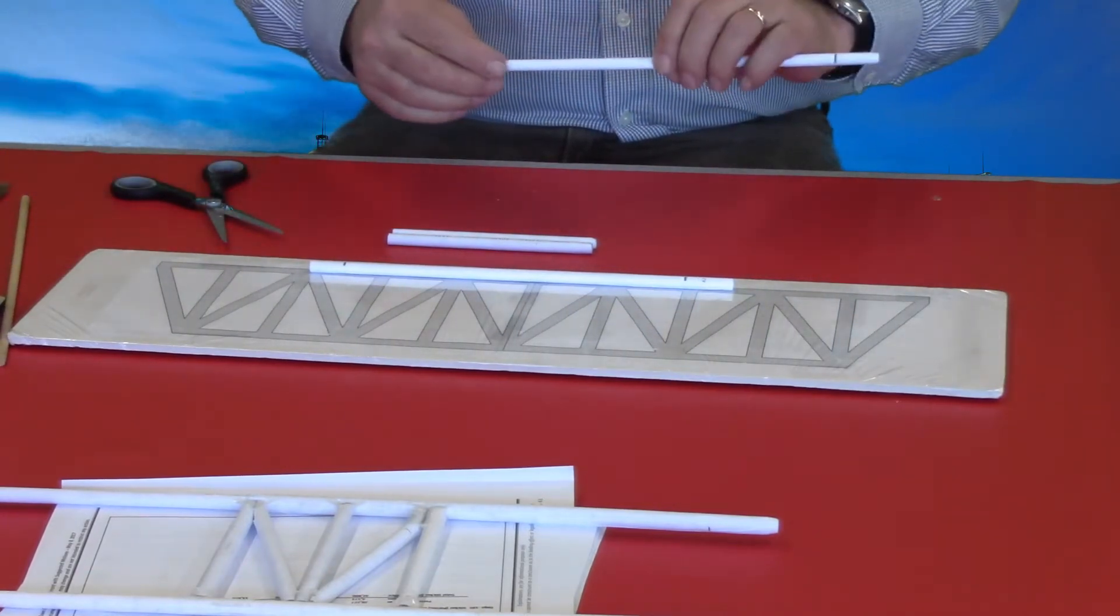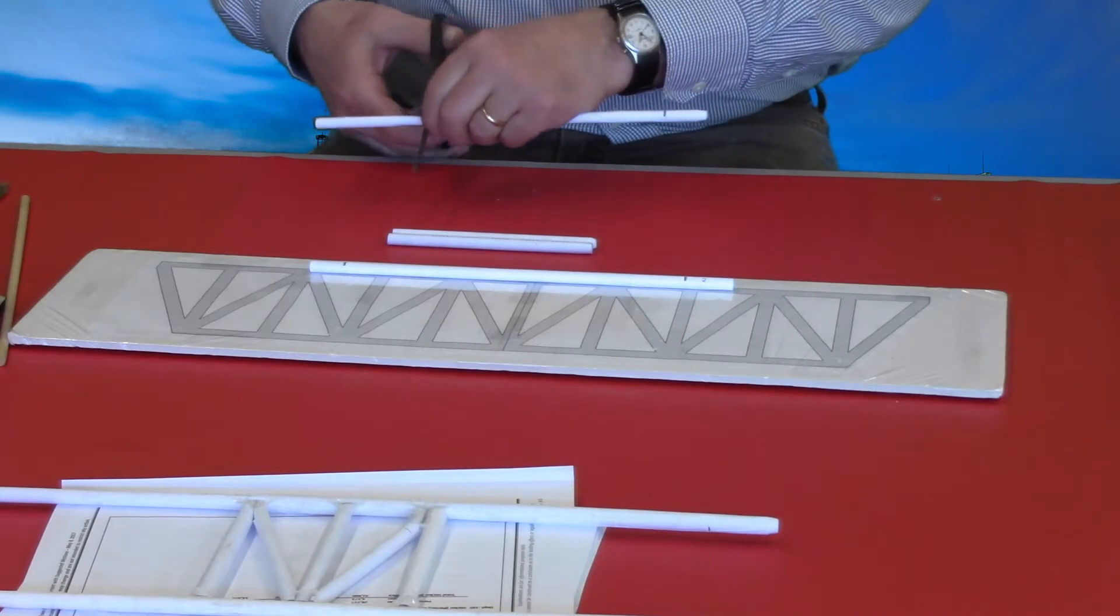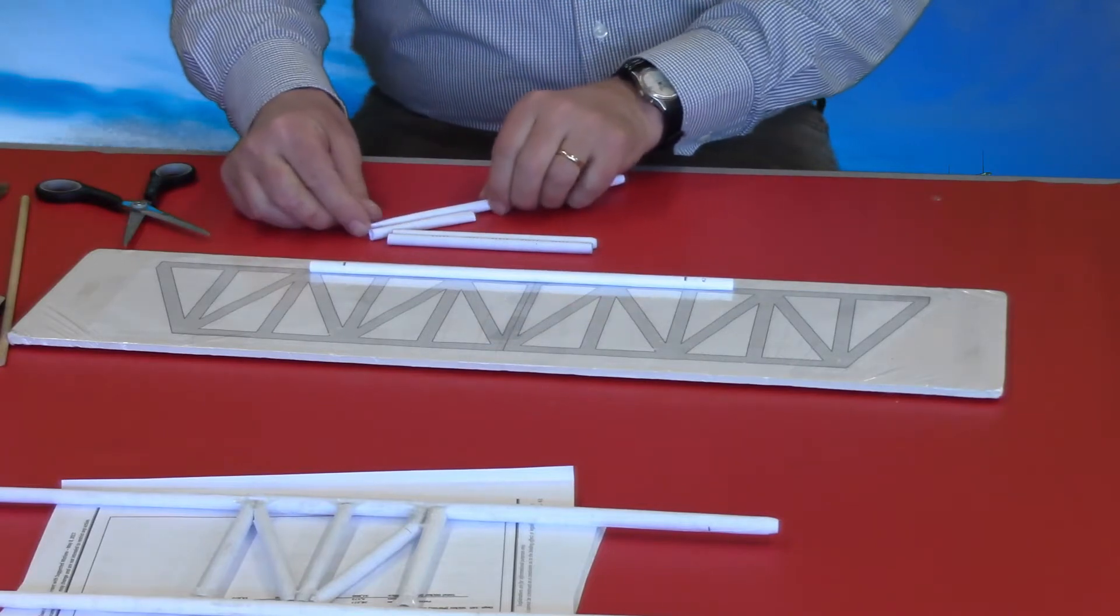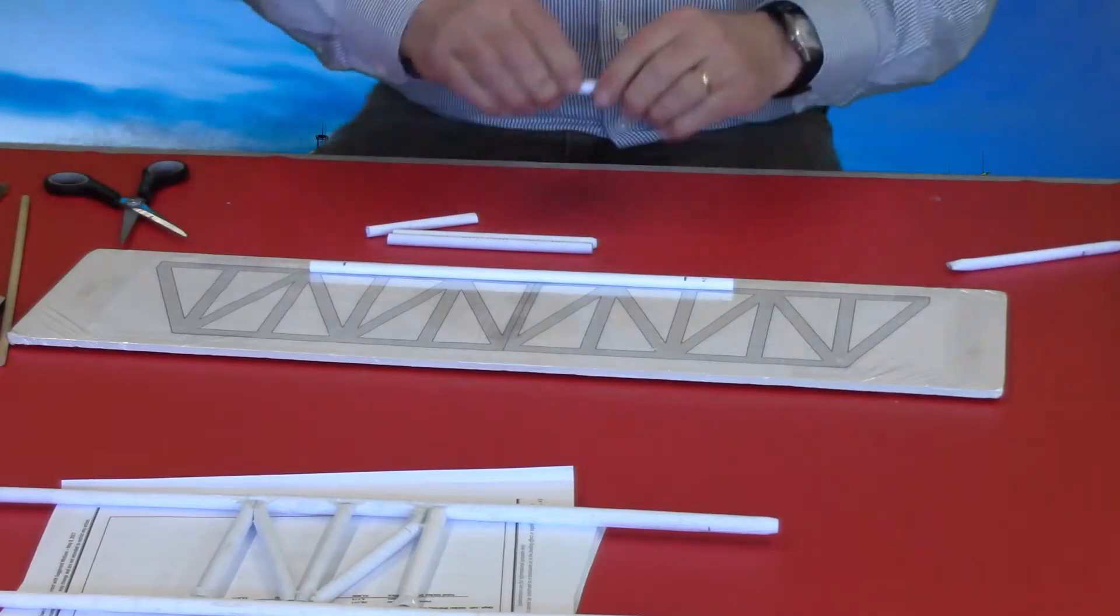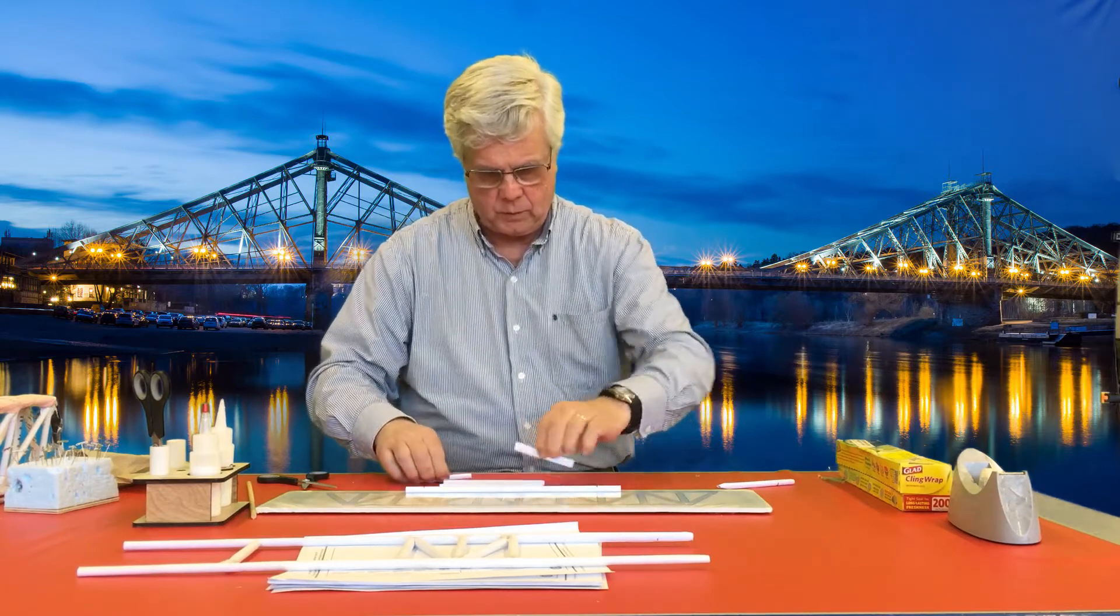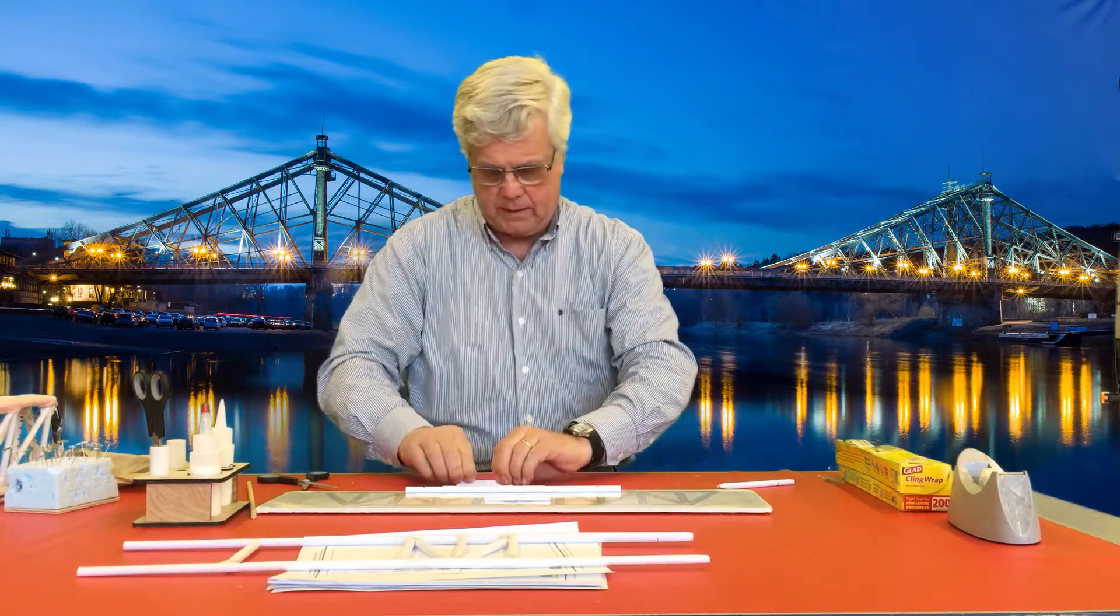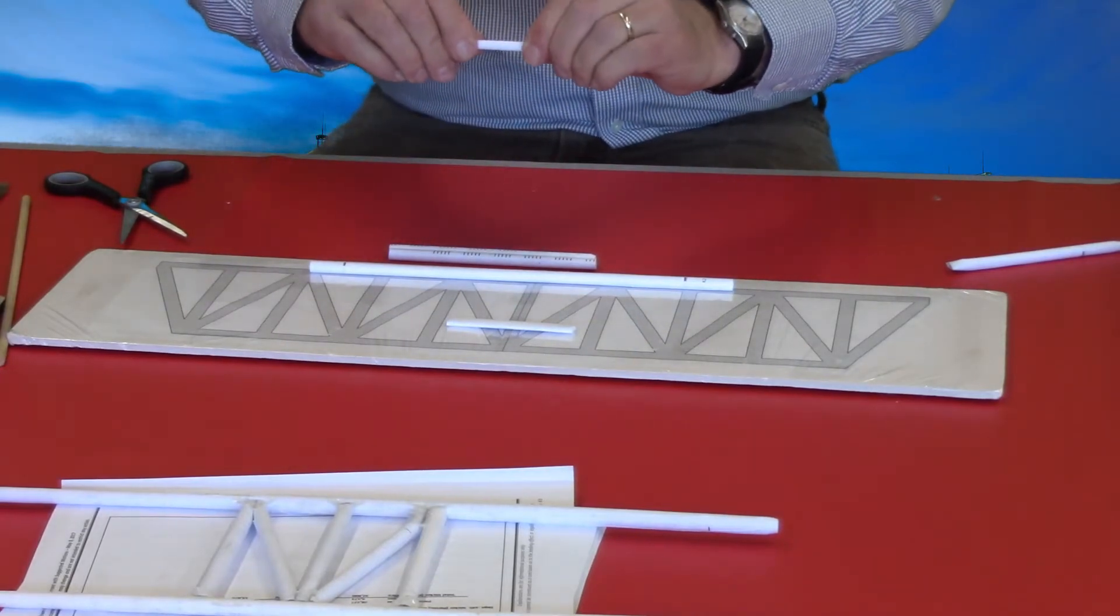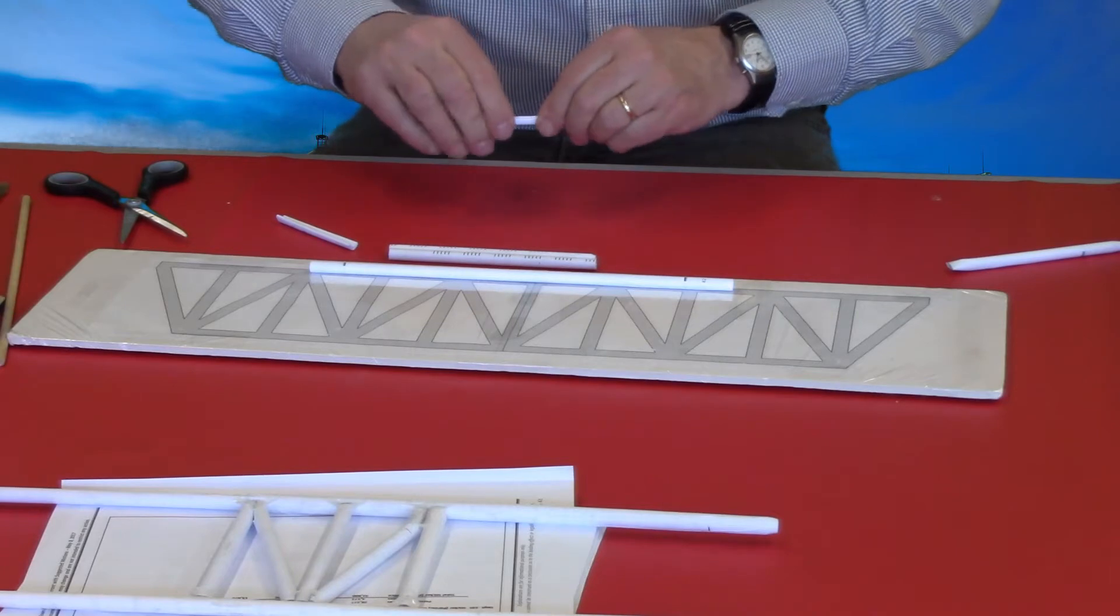So we're going to take the third tube, and I'm going to cut a length about two and a half to three inches long with my scissors, and I'm going to make another one that's the same length. And I'm going to take these and flatten them, then fold them just like so.